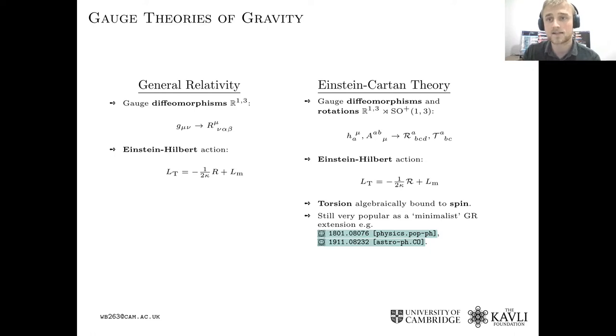General relativity is, of course, already a kind of gauge theory. It's a gauge theory of diffeomorphisms. We have a gauge potential, which is the metric, and a field strength tensor, which is the Riemann curvature tensor. We can form the usual Einstein-Hilbert Lagrangian from this.